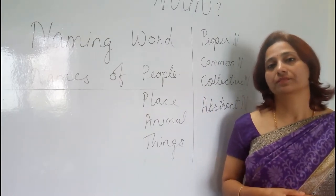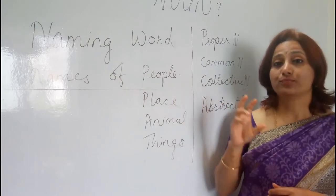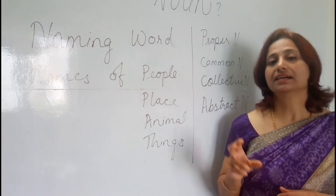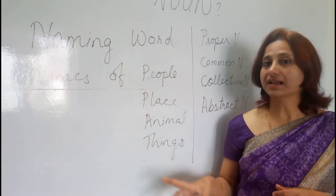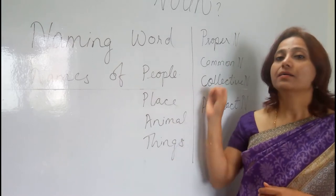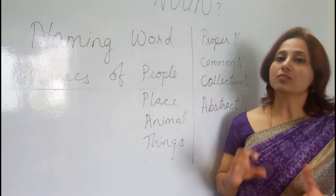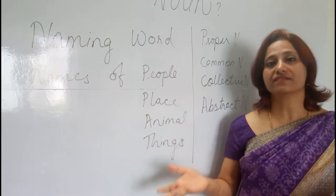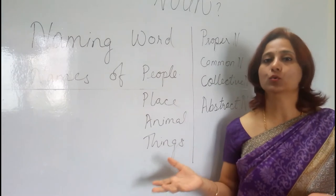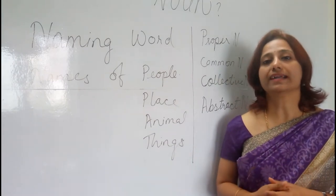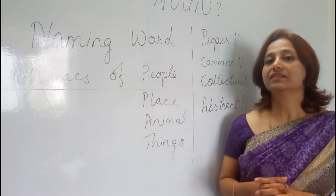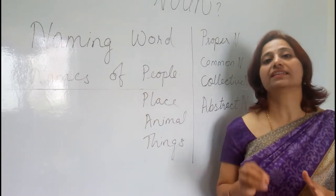Names of places like the Taj Mahal, London, Ganges, Himalayas, Mount Everest, and Abu are proper nouns. Common nouns for places can be river, ocean, sea, park, room, or dining hall — these are general names given to a place.